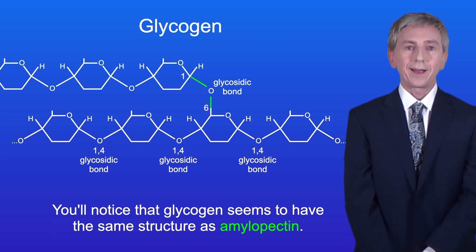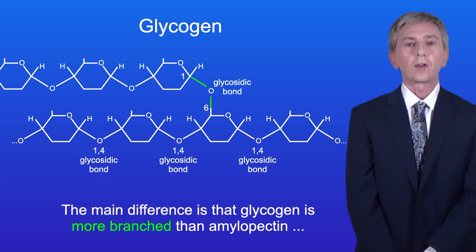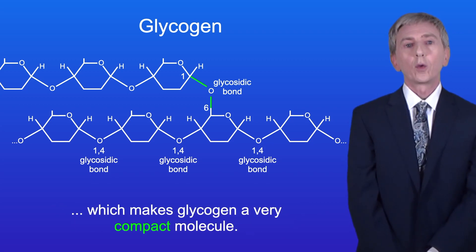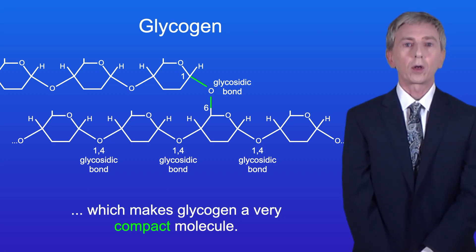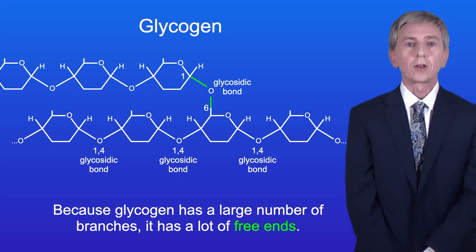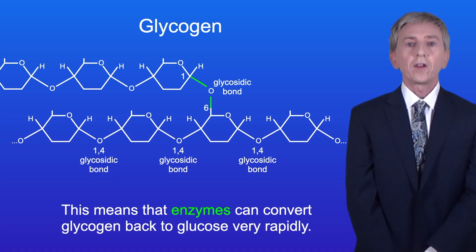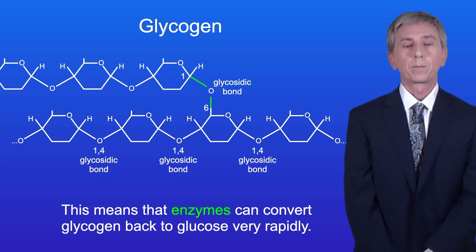You'll notice that glycogen seems to have the same structure as amylopectin. The main difference is that glycogen is more branched than amylopectin, which makes glycogen a very compact molecule. And because glycogen has a large number of branches it has a lot of free ends, which means that enzymes can convert glycogen back to glucose very rapidly.